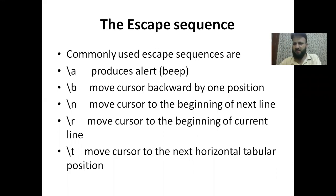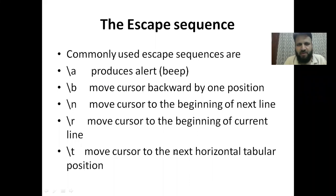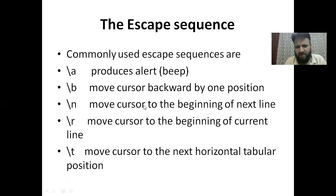If we use backslash-b, it moves backward by one position. Backslash-n moves to the beginning of the next line. Backslash-r moves to the beginning of the current line. Backslash-t moves the cursor to the next horizontal tab position. Generally, we use backslash-n and endl 80-90% of the time, which outputs on a new line.